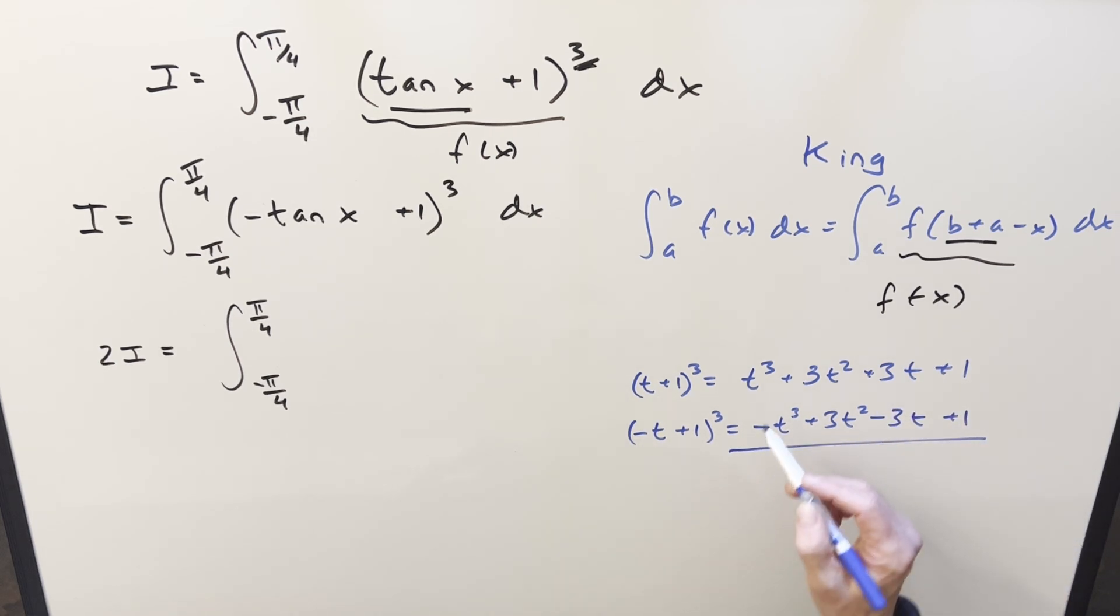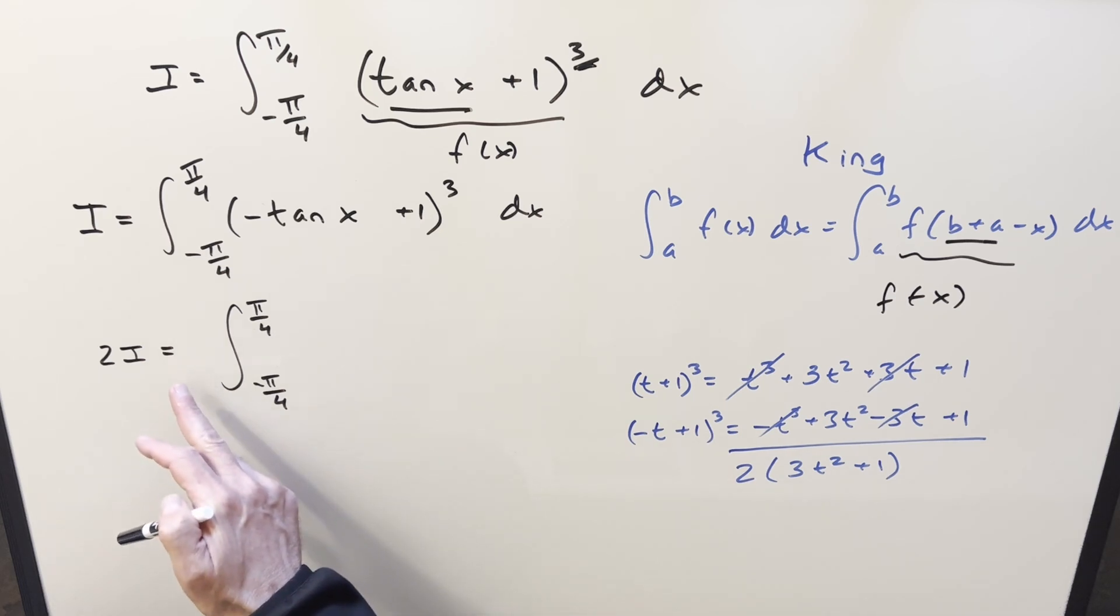But then when we add it together, we're going to get all this cancellation of the odd terms. And then we just have two copies of 3t squared plus 1. So I can write this as 2 times 3t squared plus 1. And then we'll just take this and plug it back in.